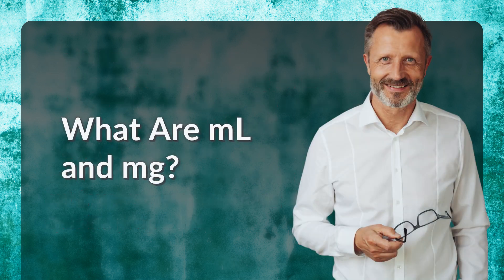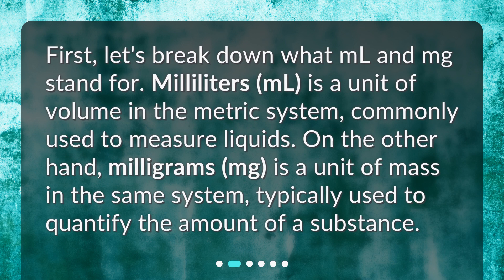What are ML and MG? First, let's break down what ML and MG stand for. Milliliters, ML, is a unit of volume in the metric system, commonly used to measure liquids. On the other hand, milligrams, MG, is a unit of mass in the same system, typically used to quantify the amount of a substance.